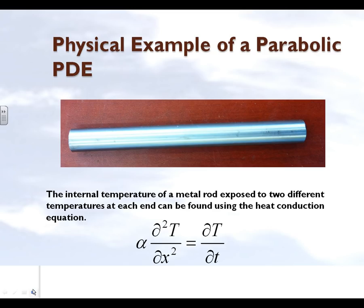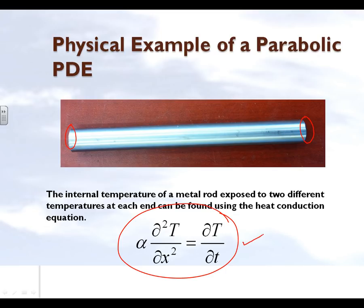The example we are taking is the traditional equation for finding the temperature in a particular rod. We want to find out what the internal temperature of the metal rod will be when we subject it to two different temperatures on the two ends. The differential equation governing the temperature in the rod is a function of location along the length of the rod and time, given by a second order linear parabolic partial differential equation.